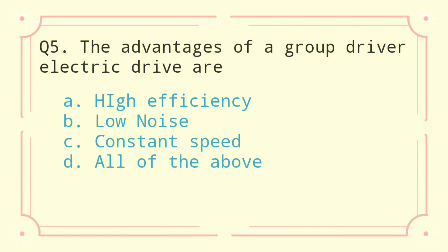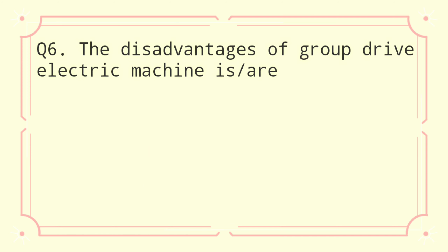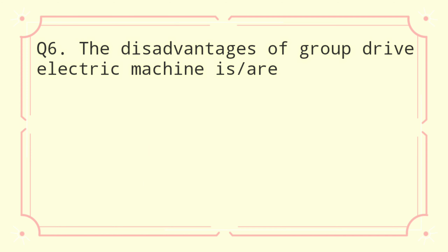Question 5: The advantages of a good electric drive are: a) high efficiency, b) low noise, c) constant speed, d) all of the above. The correct answer is high efficiency.